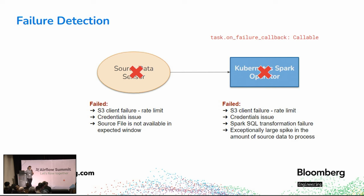When failures occur, a good way to be alerted is by using the on_failure_callback that can be defined at the task level. You define a callable function of your choice that will be invoked when the task fails. Common use cases include: sending an email to a stakeholder who is invested in ensuring the task succeeds, or leaving an informative record in a database to keep track of how many times the task instance failed and for what reasons.